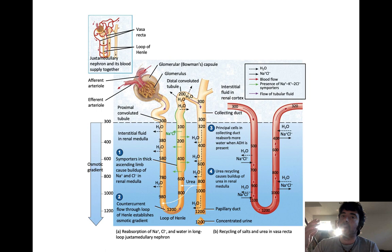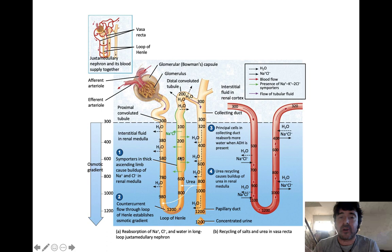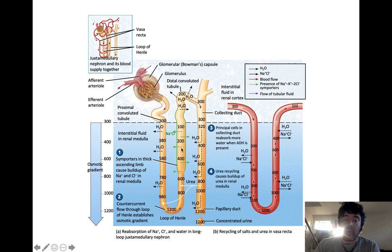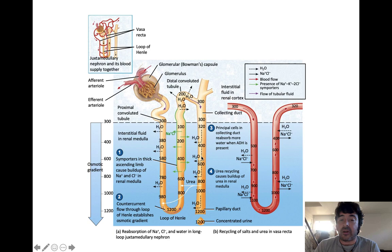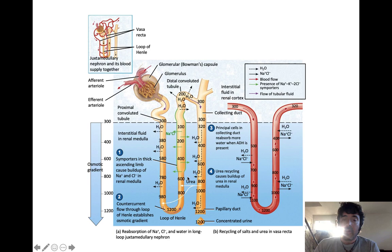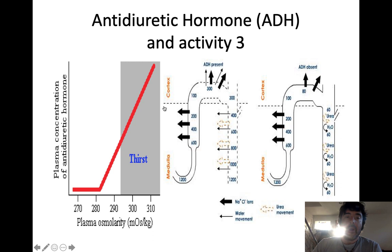In the ascending loop of Henle, you get the reabsorption of salt and only salt. As filtrate moves up the ascending limb and salt is reabsorbed, the filtrate becomes more and more dilute. In the distal convoluted tubule you get a little bit of reabsorption and secretion, and then filtrate enters the collecting duct. The collecting duct is interesting because it doesn't always absorb water — it only absorbs water when we need to reabsorb it; otherwise the filtrate just exits and becomes urine. Most secretion also takes place in the proximal convoluted tubule.